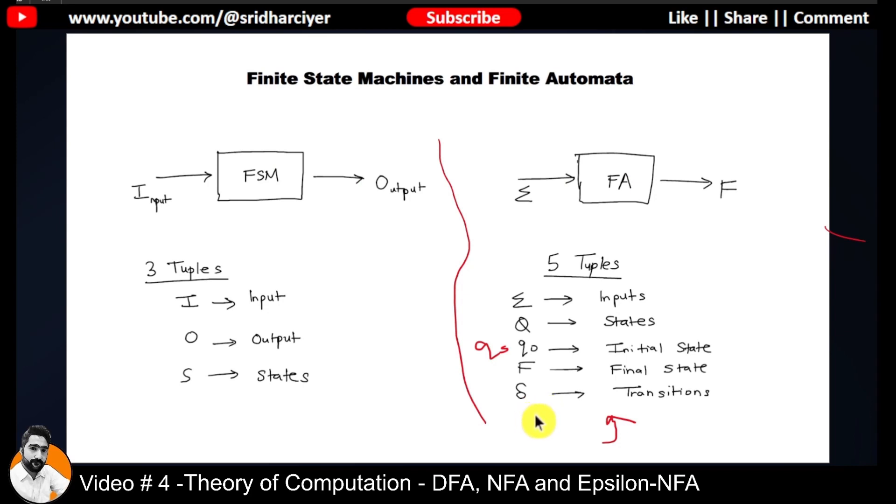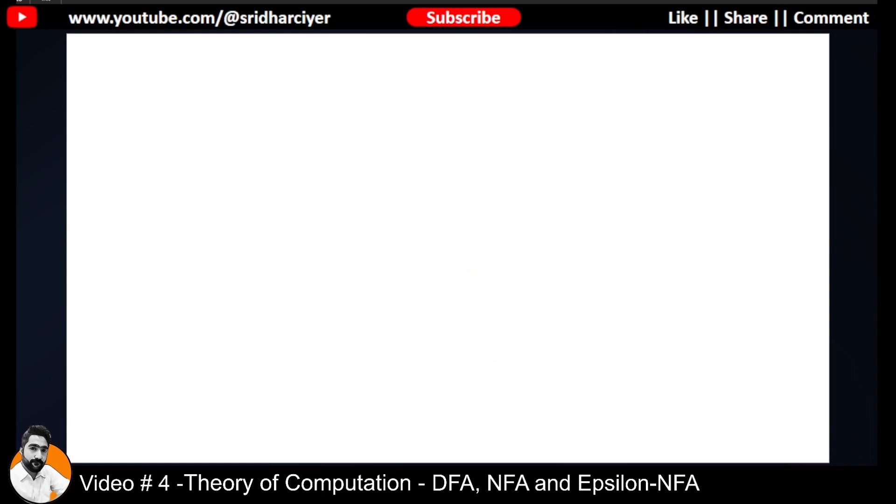Using this, we can show that a particular machine is able to make a transition to a different state based upon certain inputs. So how to show those transitions? It's very simple. Suppose your machine is currently present in the Q0 state and you are taking an input, suppose A. Then what happens is from Q0 on input A, the machine might go to a state called Q1. Similarly, on input B, the machine might remain in the same state as Q0. So these are what we call transitions.